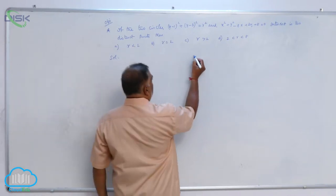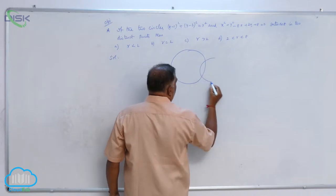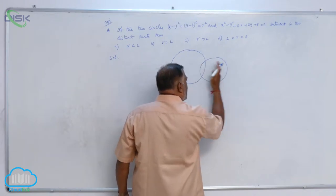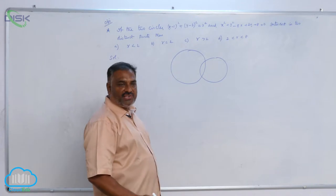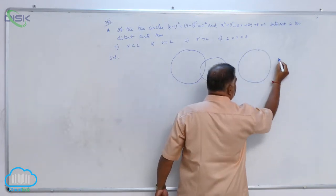generally two circles are intersecting like this. You can see if they come a little bit away from each other, they touch each other externally.